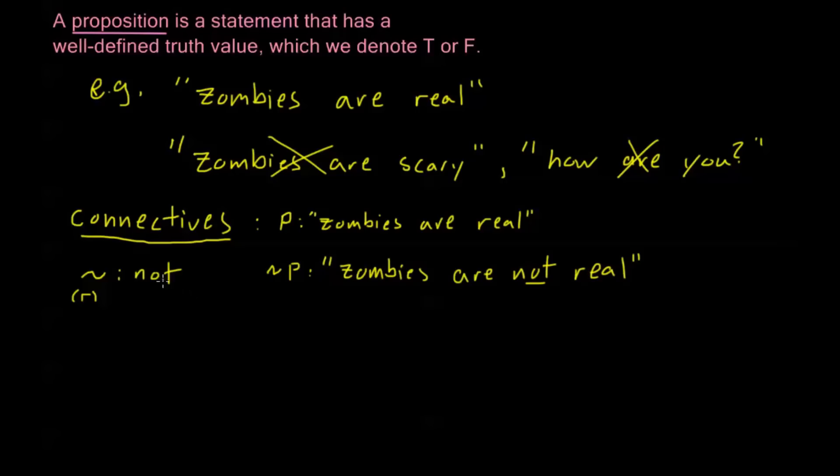Now, we have two other connectives. Just like not, we have other words in English that we use, particularly and and or. So we have this symbol, it's like a little teepee. This means and. And we have the opposite, this little V, it looks like a capital V. This means or.